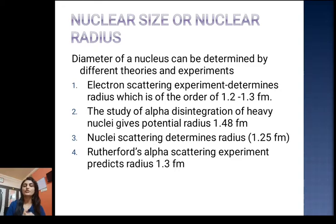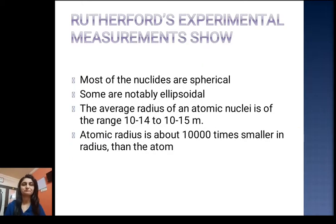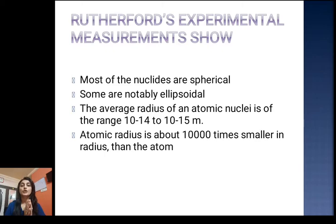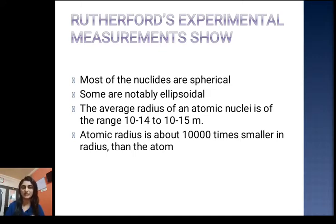Using Rutherford's alpha scattering experiment, the predicted radius is of the order of 1.3 fermi. Rutherford's experimental measurements show that most nucleides are spherical and some are notably ellipsoidal. The average radius of an atomic nucleus is of the order of 10⁻¹⁴ to 10⁻¹⁵ meter.